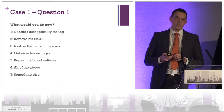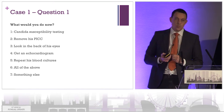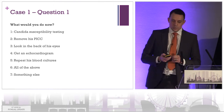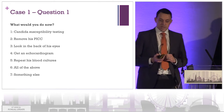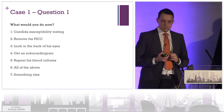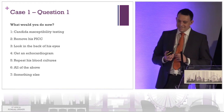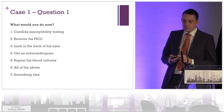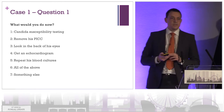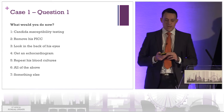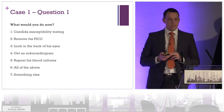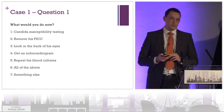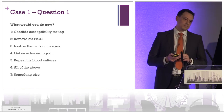The first question to get your thinking caps on: what would you do now? Would you remove his PICC line? Would you send the candida for sensitivity testing? Would you look in the back of his eyes? Would you get an echo? Would you repeat his cultures? Would you do all of the above, or would you do something else?